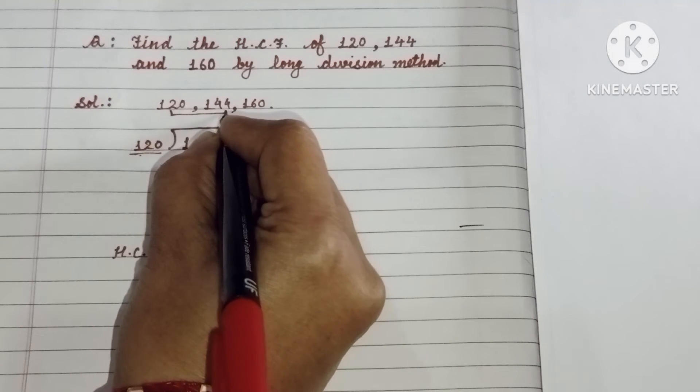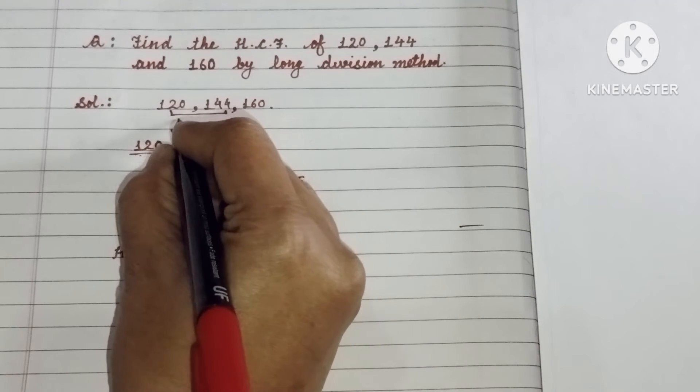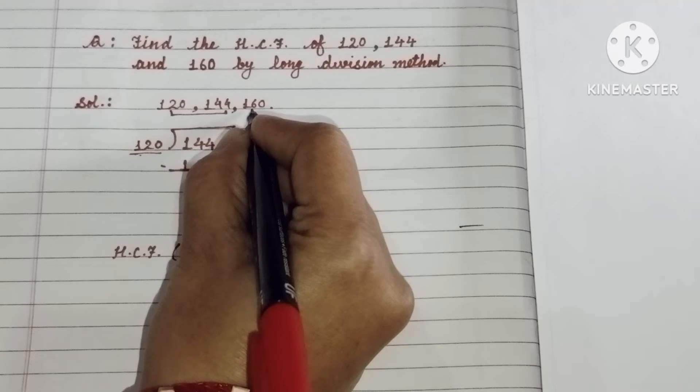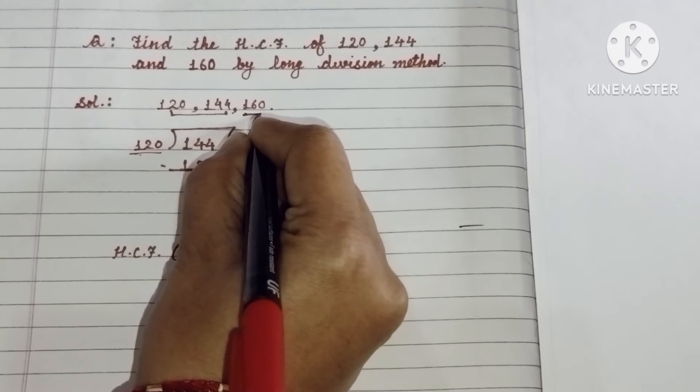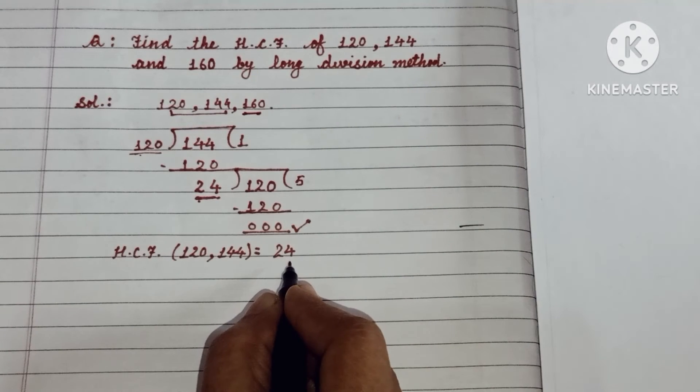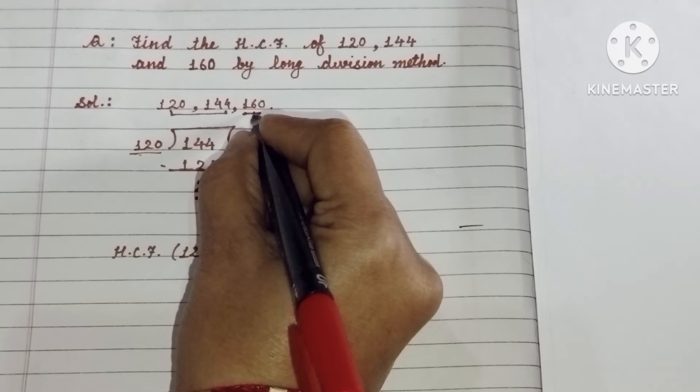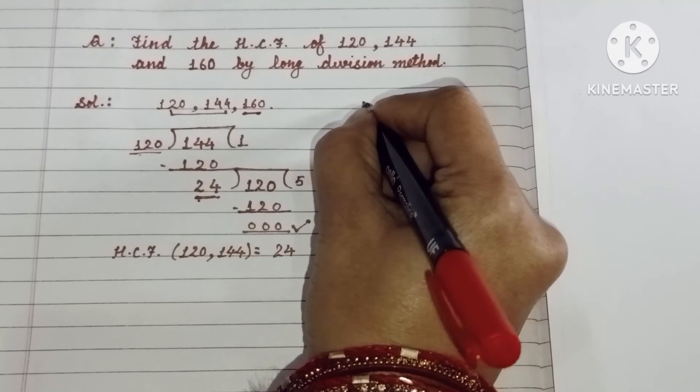Ye to ho gaya bita. HCF two numbers ka. Aapko kiska calculate kare na hai? Three numbers ka. To ab aap consider karenge is third number ko. HCF aapka ayae 24. And third number is 160. So take these two numbers.